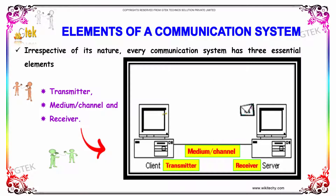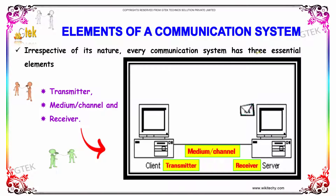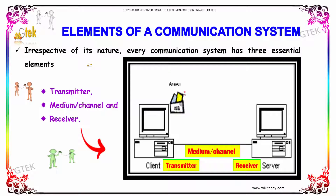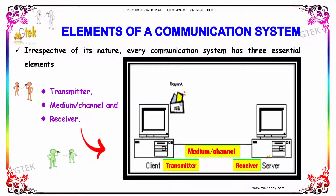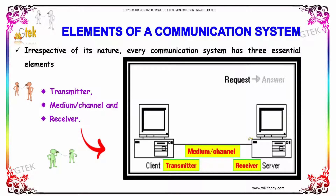Irrespective of its nature, every communication system will have three essential elements: the transmitter, the receiver, and a medium between the transmitter and receiver.